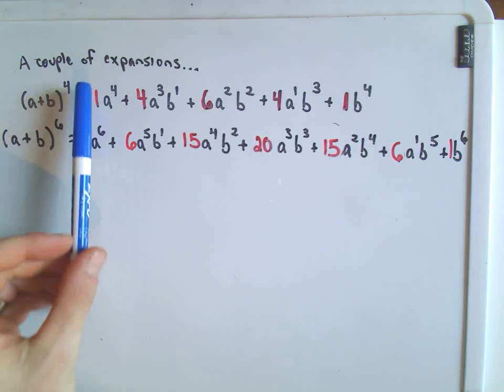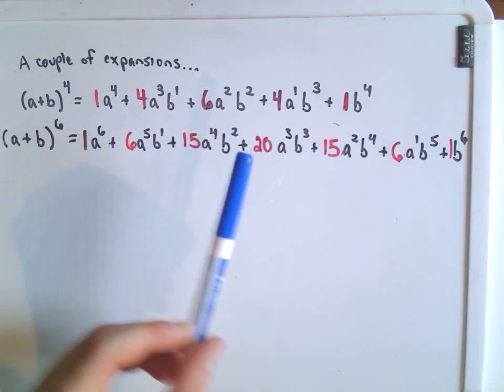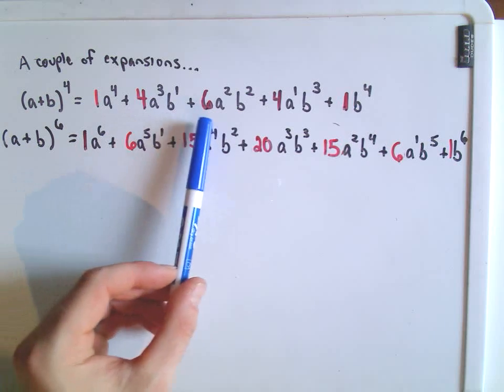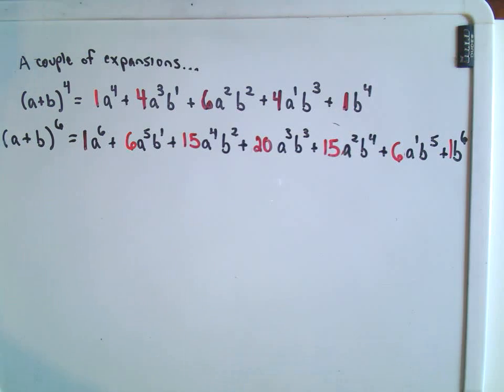collect your like terms, you're going to get this value, 1a to the fourth plus 4a cubed b to the first, 6a squared b squared, 4a to the first b cubed, plus b to the fourth.